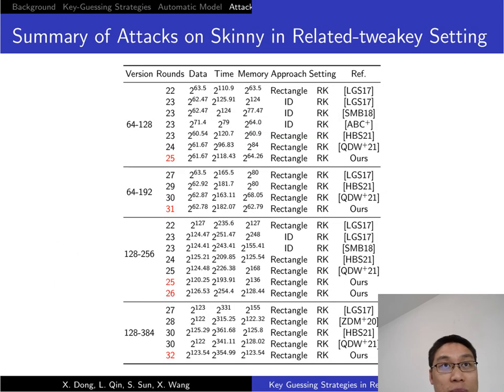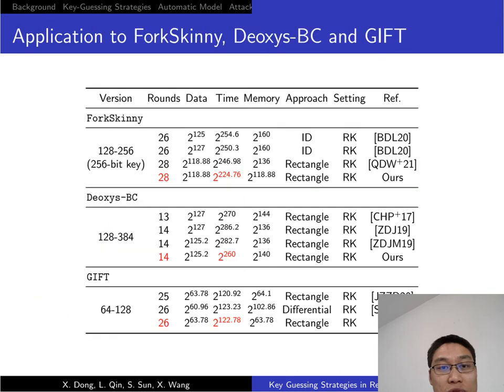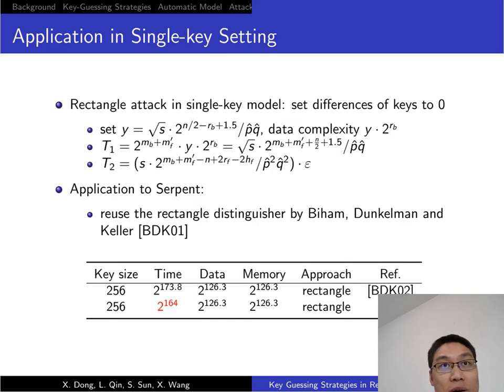We also applied our model to ForkSkinny, Deoxys-BC, and GIFT. Our model can also be applied to single-key setting and give an example application to Serpent.